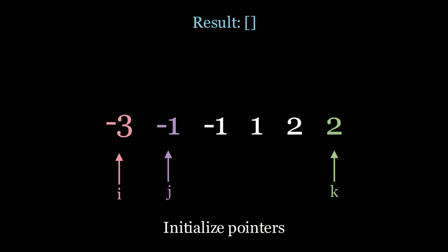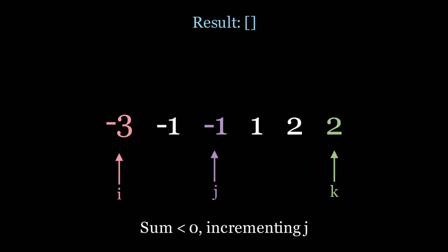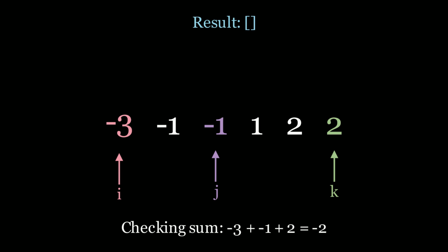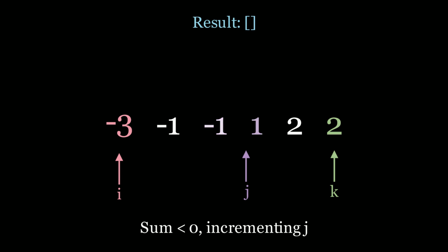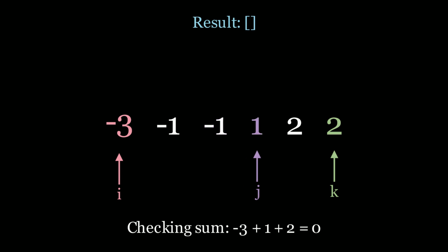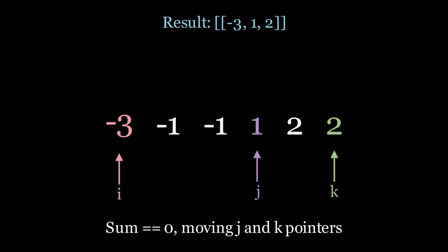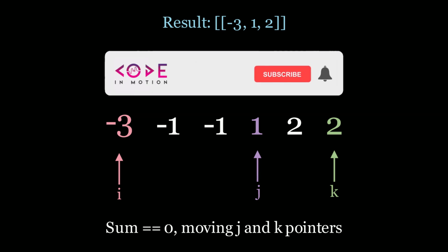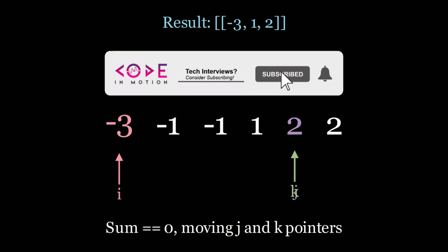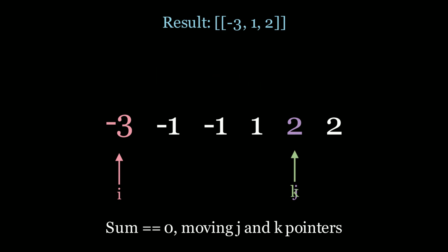Let's see how this works. We sum the three pointers: negative three plus negative one plus two equals negative two. Negative two is less than zero, so we increment j. Again: negative three plus negative one plus two equals negative two — still less than zero, so we move j along again. Now negative three plus one plus two equals zero — we found a solution! We add it to the result array. Since we found a result, we increment j and decrement k simultaneously. Now k equals j, so we're done this iteration and need to move the i pointer.